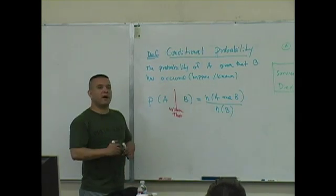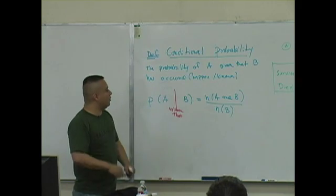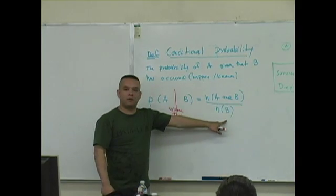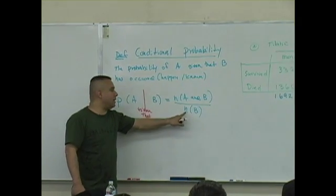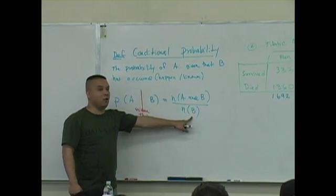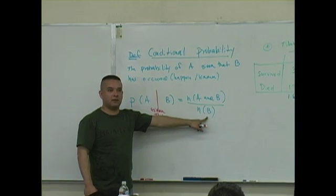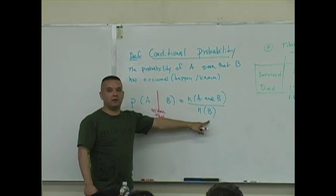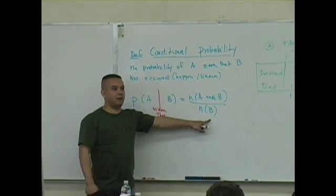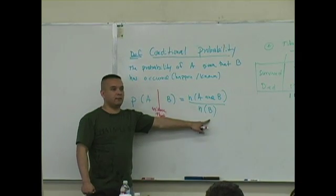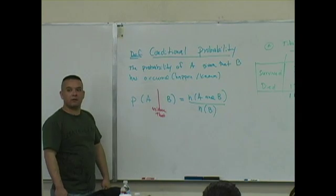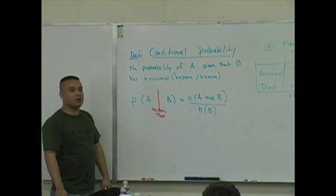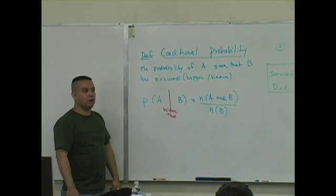Notice something about this probability definition: what's in the denominator? What's on the bottom? n of what? Notice that's not n of S, it's n of B. This is your conditional probability definition that we're going to use here. Anybody have any questions on that part? You sure?